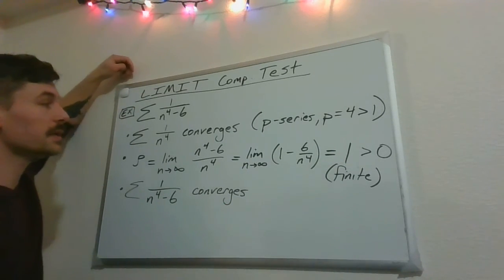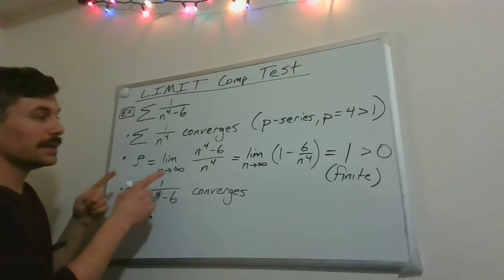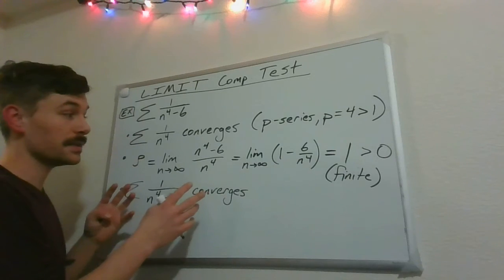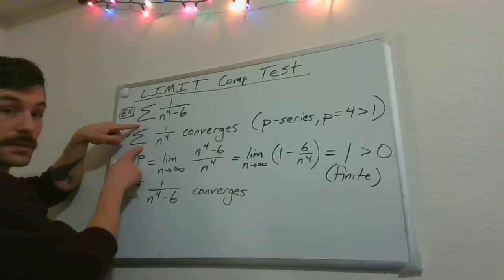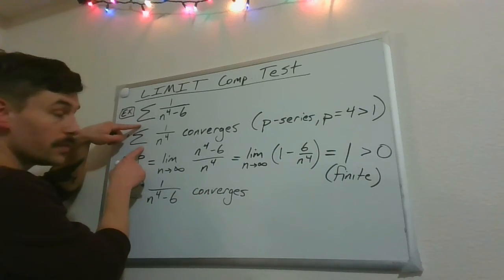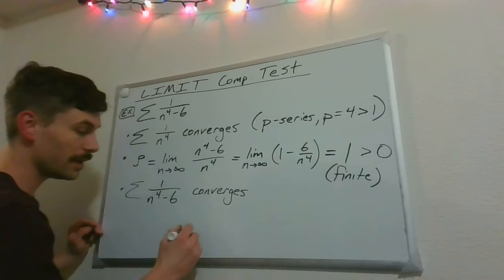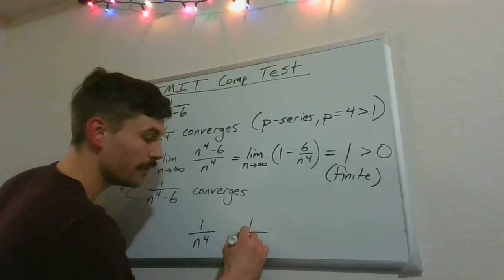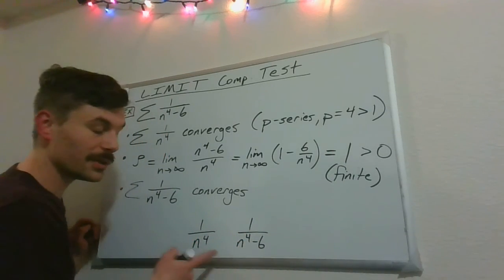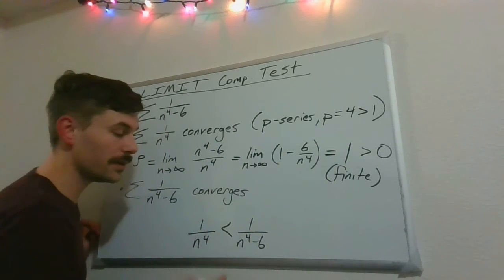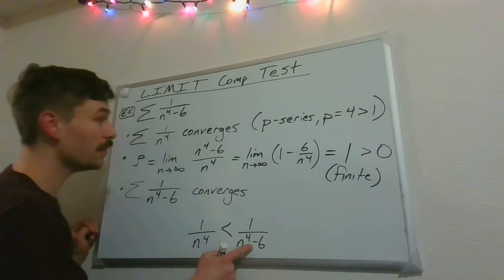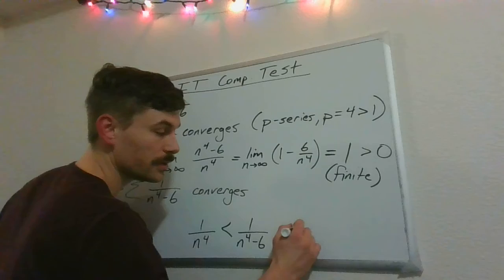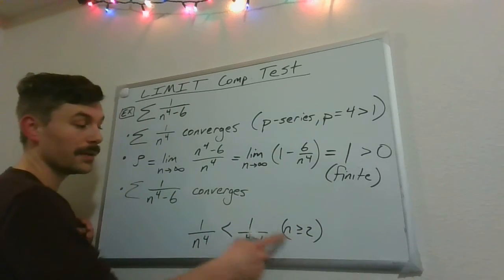One thing I will note is this doesn't have the issue of indexing, right? As long as these two index from the same spot, we're in good shape. So with the comparison, remember I had said 1 over n to the 4th and 1 over n to the 4th minus 6, but the inequality we got, this inequality where, unfortunately, our original series was larger, that was only true for n greater than or equal to 2.